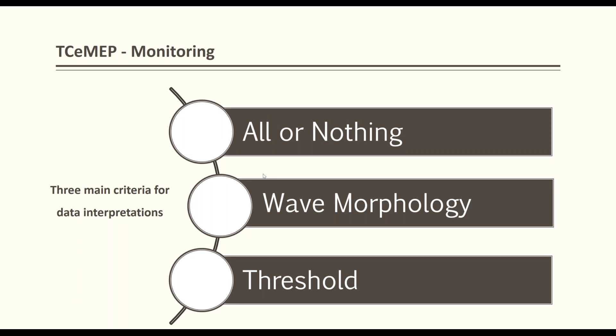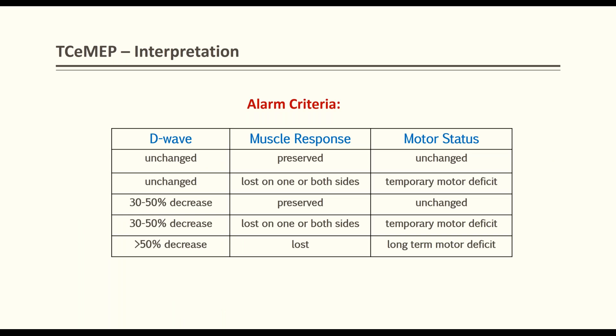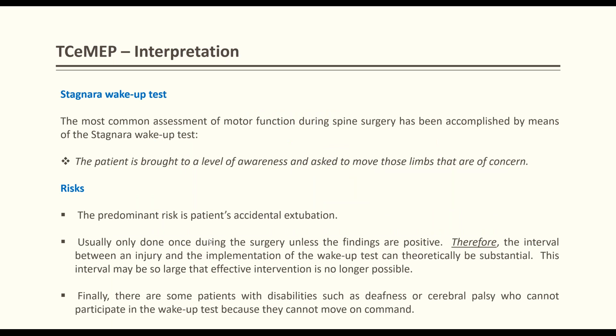There are three main criteria for data interpretation: all-or-none, waveform morphology, and threshold. Alarm criteria and post-operative motor status: if D wave is unchanged and muscle response is preserved — motor function preserved. If D wave is unchanged but one or both sides of MEP are lost — temporary deficit, recovery within 72 hours. If D wave decreases 30–50% with no MEP change — motor function preserved. If D wave decreases >50% and MEP is lost — patient will have long-term or permanent deficit.